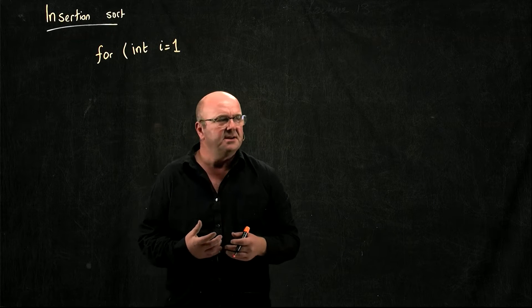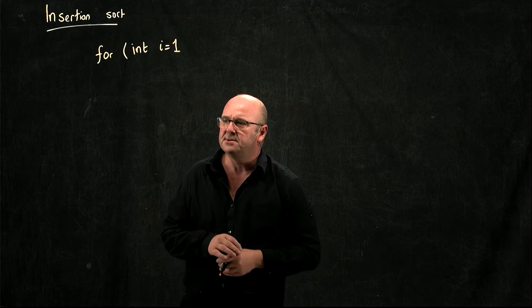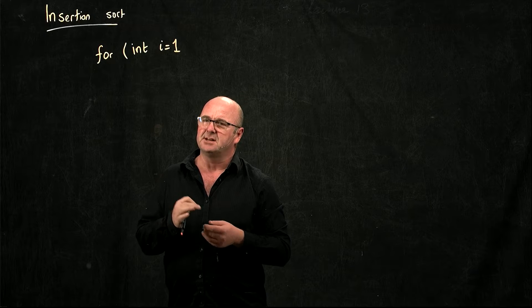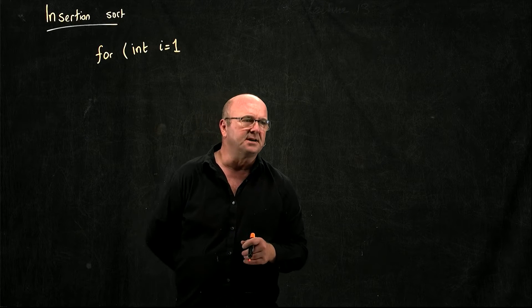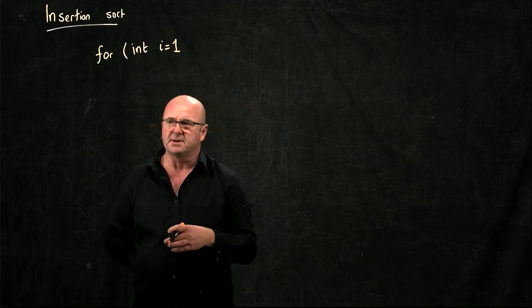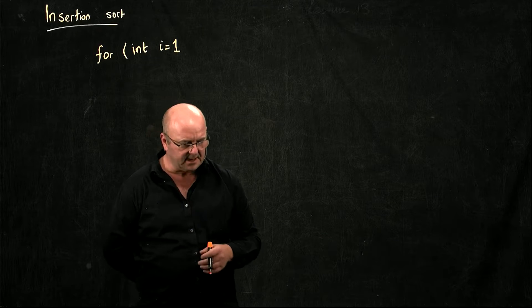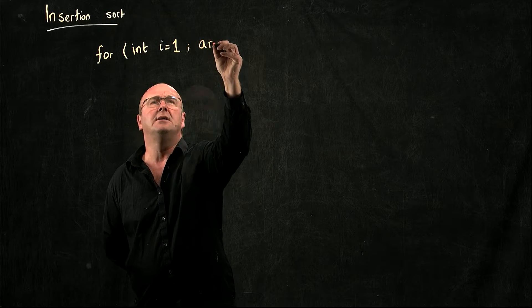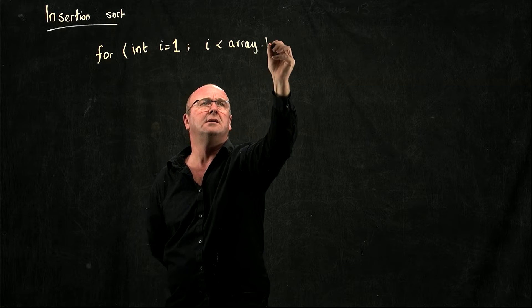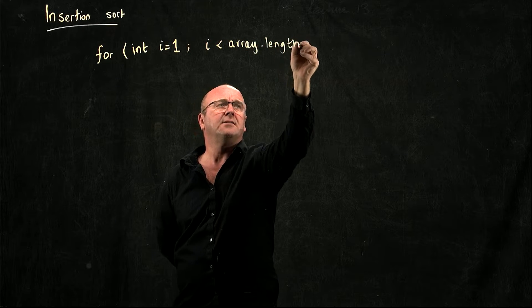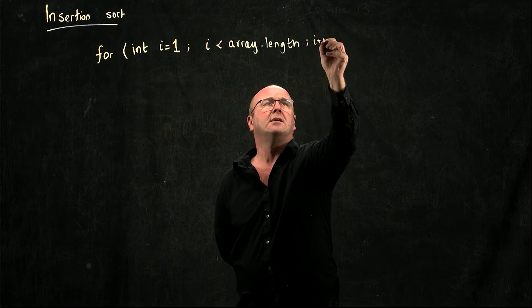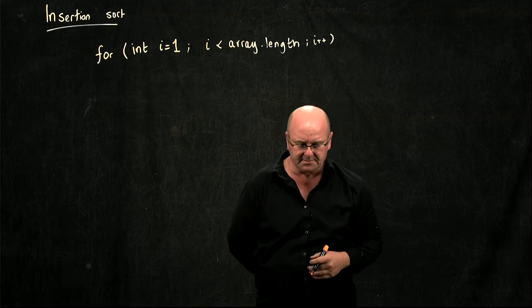When we're sorting a list with insertion sort, we skip the first element. So our for loop can start at element one, because we're going to compare that to the element before it, looking at every element in the list with our simple for loop.